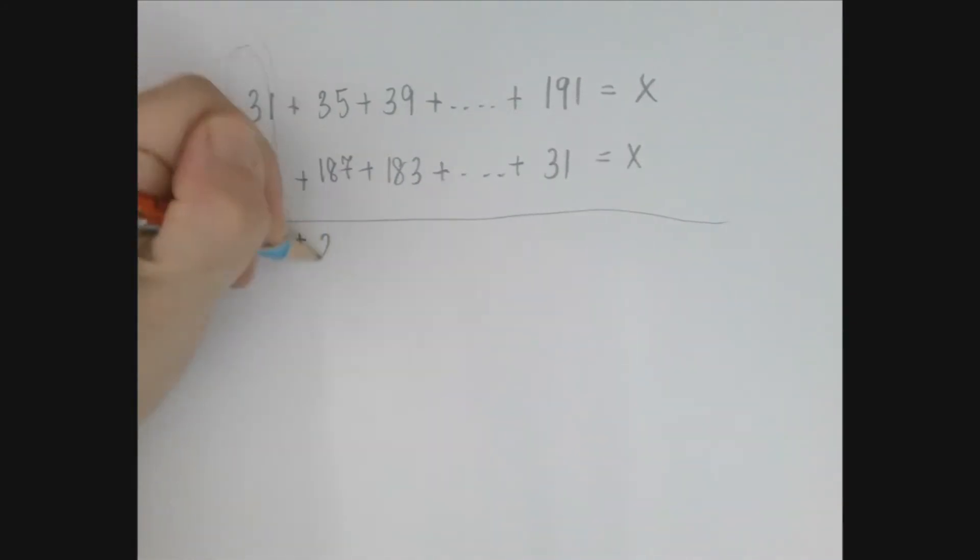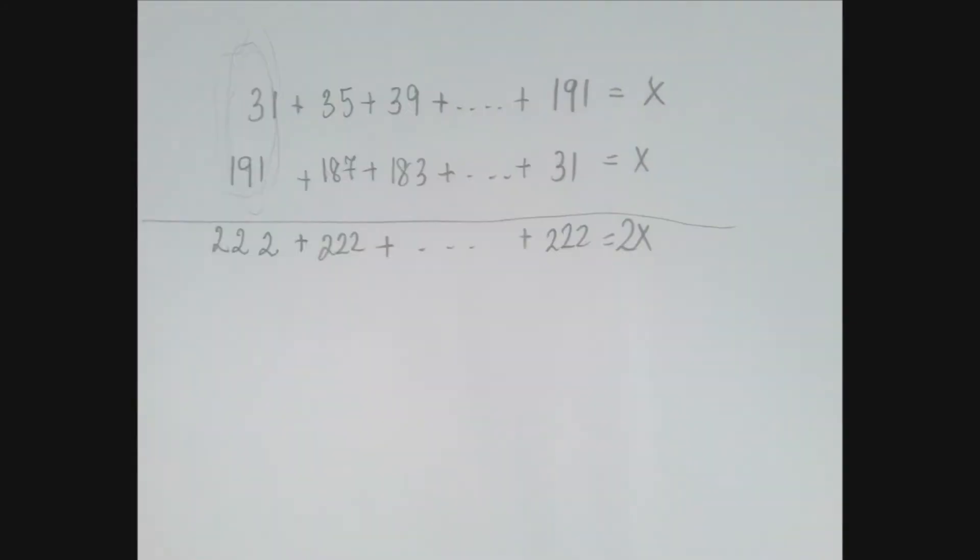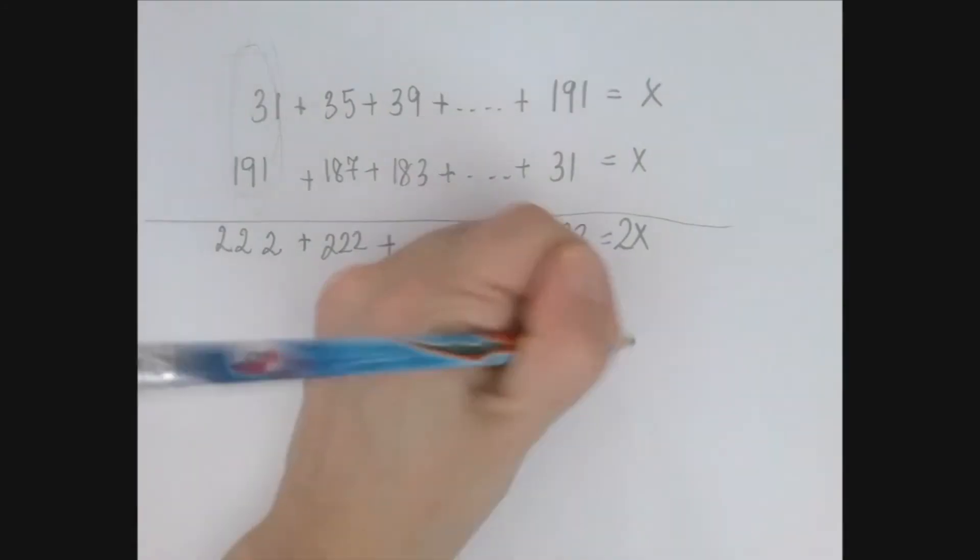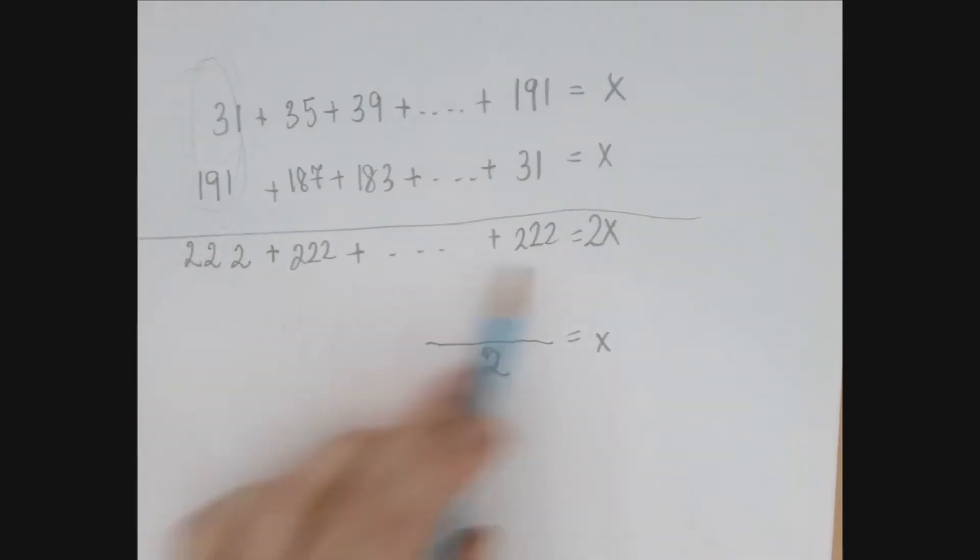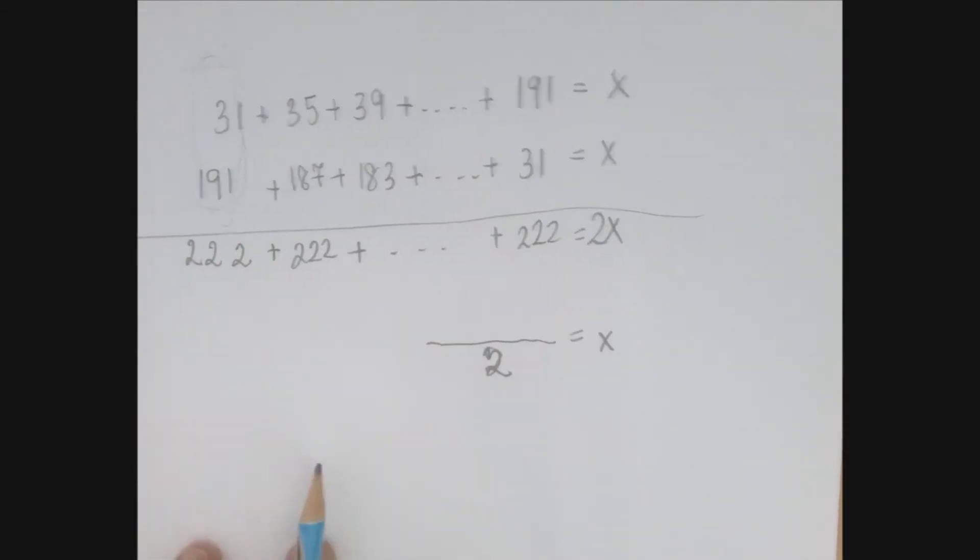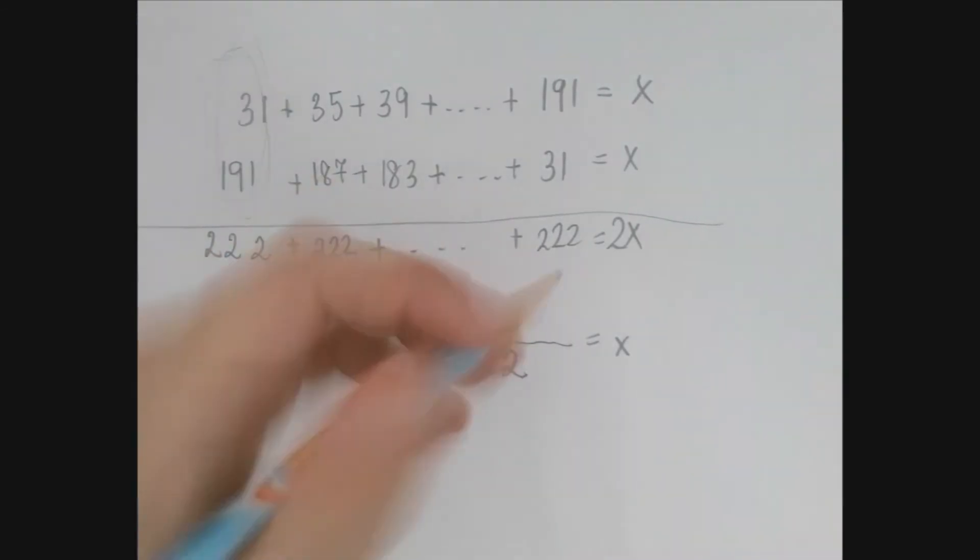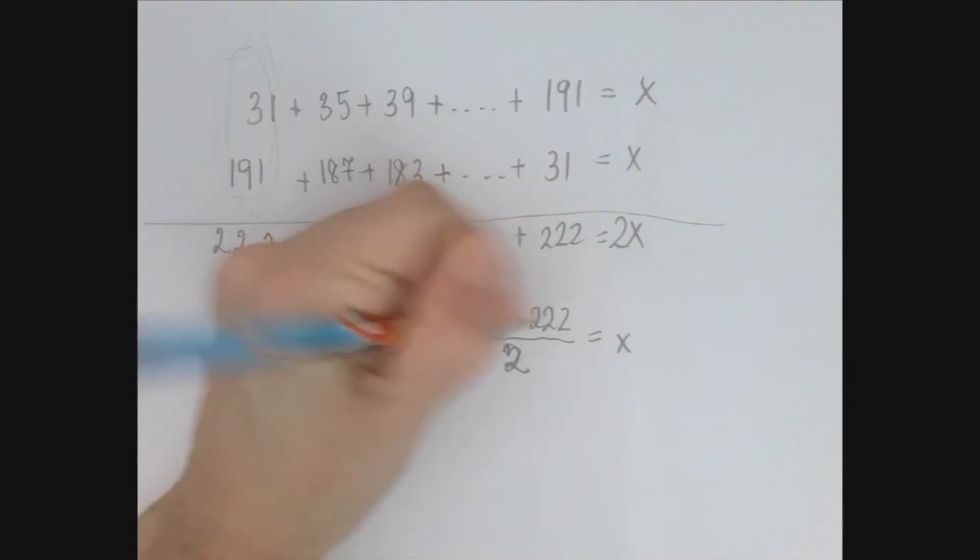And indeed, this is also 222. Lots of twos in this one. So we're going to find the number of seats in the theater. If we figure out this sum and divide by two, and this sum is going to be a multiple of 222, the question is how many times did we add the number 222 to itself?